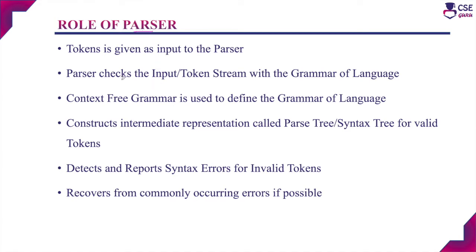The source code is given as input to the lexical analyzer, and the lexical analyzer produces tokens as output. This token stream is given as input to the parser. Once the parser accepts the token stream, it will check it against the grammar of the language — that is, it will check whether the token stream is derivable from the grammar. If so, that particular token stream is syntactically correct and it is a valid one.